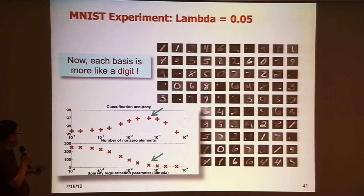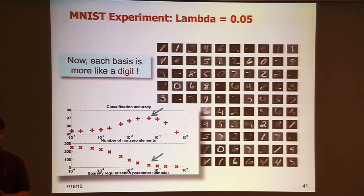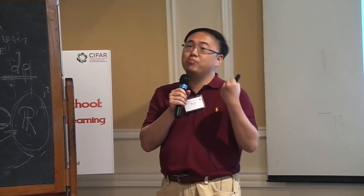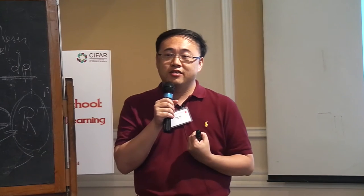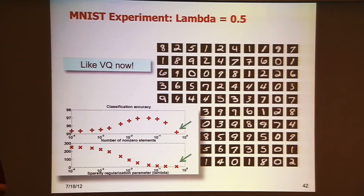At that point, the classification accuracy reaches its highest. The representation is very sparse. If you further increase the regularization parameter, you end up with something like clustering — in the extreme case you pick only one basis to represent data. Then those bases look like cluster centers, and sparsity ends up with only one dimension activated. But the classification accuracy is not good.